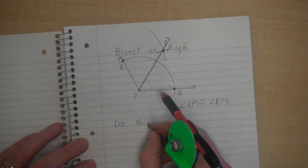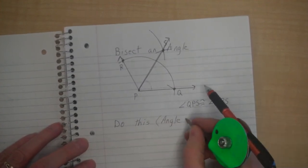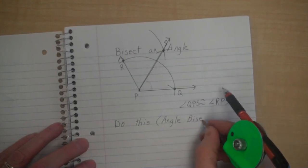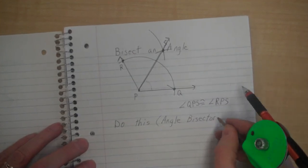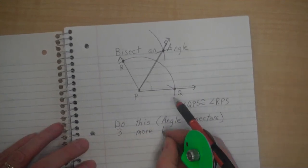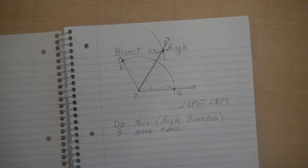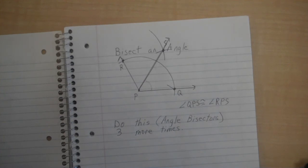Do this angle bisectors three more times for practice. That is our first installment in constructions. I will leave you with that and let you work on that. It will be working independently. We'll be doing it during class sometimes. Goodbye for now.